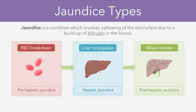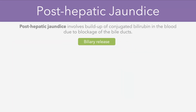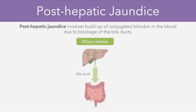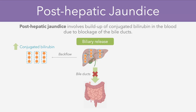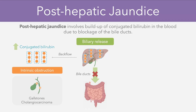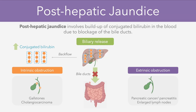Let's now take a look at the third and final type of jaundice, which is a post-hepatic jaundice. This involves a build-up of the conjugated bilirubin levels in the blood due to a blockage of the bile ducts. What normally happens is that the conjugated bilirubin molecules enter the gut via the bile ducts. If we therefore have some level of obstruction of the bile ducts, these molecules of conjugated bilirubin end up backflowing, which increases their concentration in the blood. There can be different types of obstruction: intrinsic obstruction caused by gallstones and cholangiocarcinomas, or extrinsic obstruction caused by pancreatic masses or enlarged lymph nodes, where there's some sort of external pressure on the bile ducts resulting in them becoming more narrow and blocked over time.